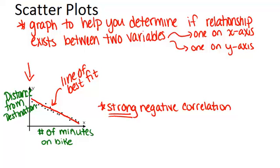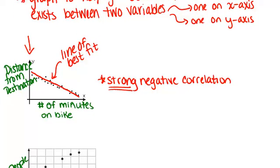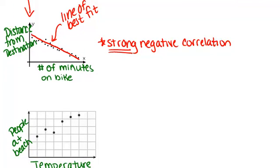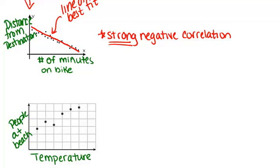So we're going to look at two other examples of scatter plots to think about other types of correlation. Here's the next one which shows temperature and people at the beach.